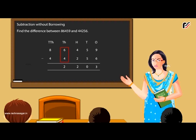4 minus 2 equals 2. Write 2 under the hundreds column. 6 minus 4 equals 2. Write 2 under the thousands column. 8 minus 4 equals 4. Write 4 under the ten thousands column. Thus, the difference is 42,203.